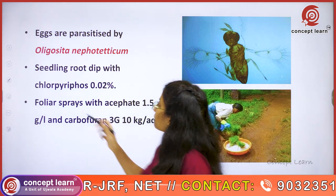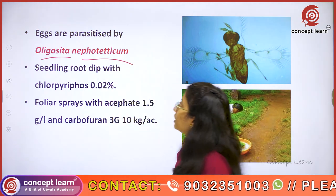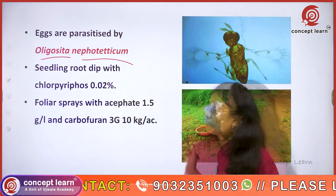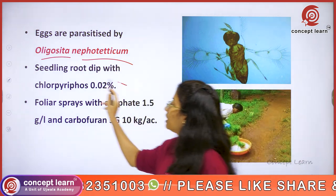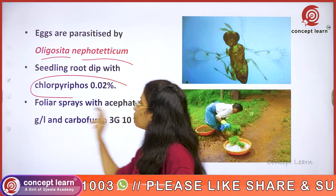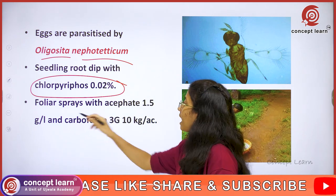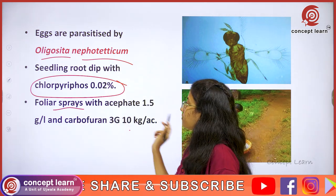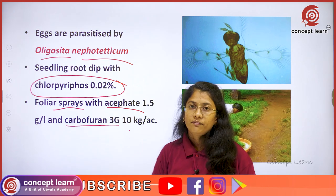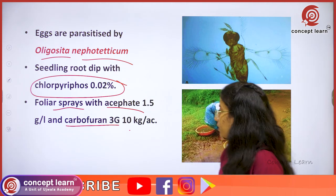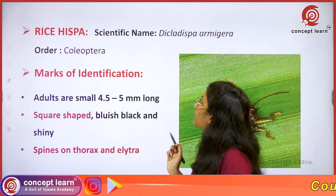Biological control can be practiced using the egg parasitoid Oligoseta nephoteticum. It is also recommended to follow the seedling root dip technique with chlorpyrifos. Foliar sprays with acephate and application of carbofuran granules are also recommended chemical management options.